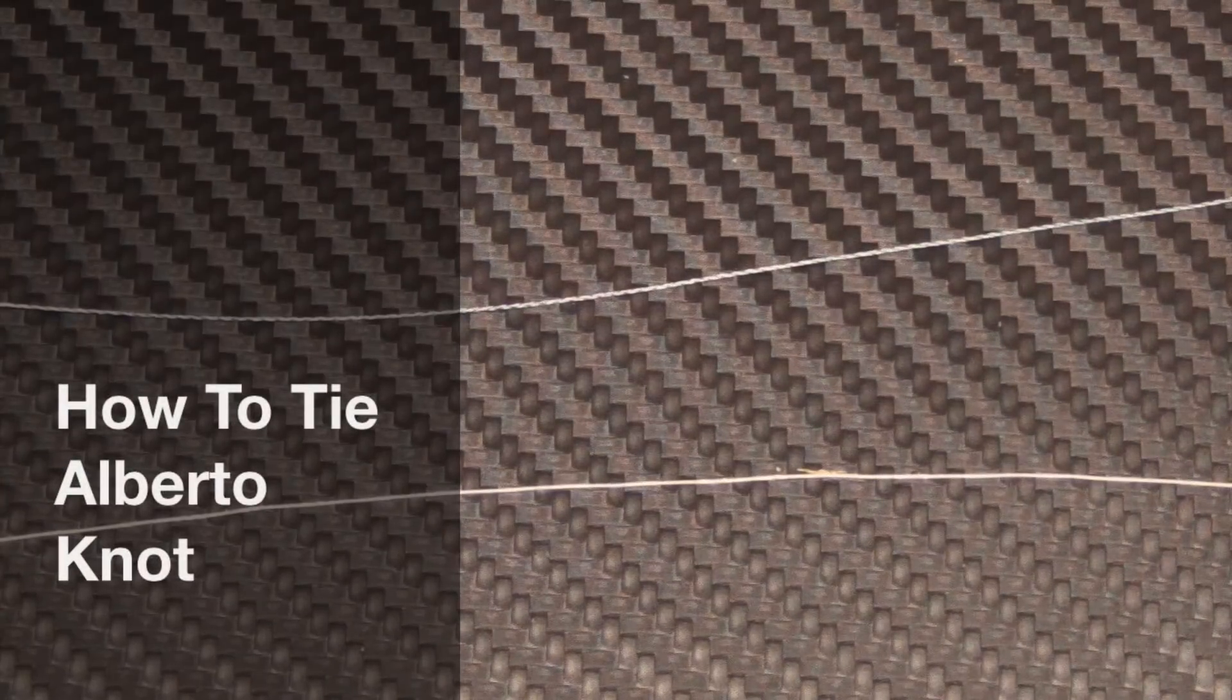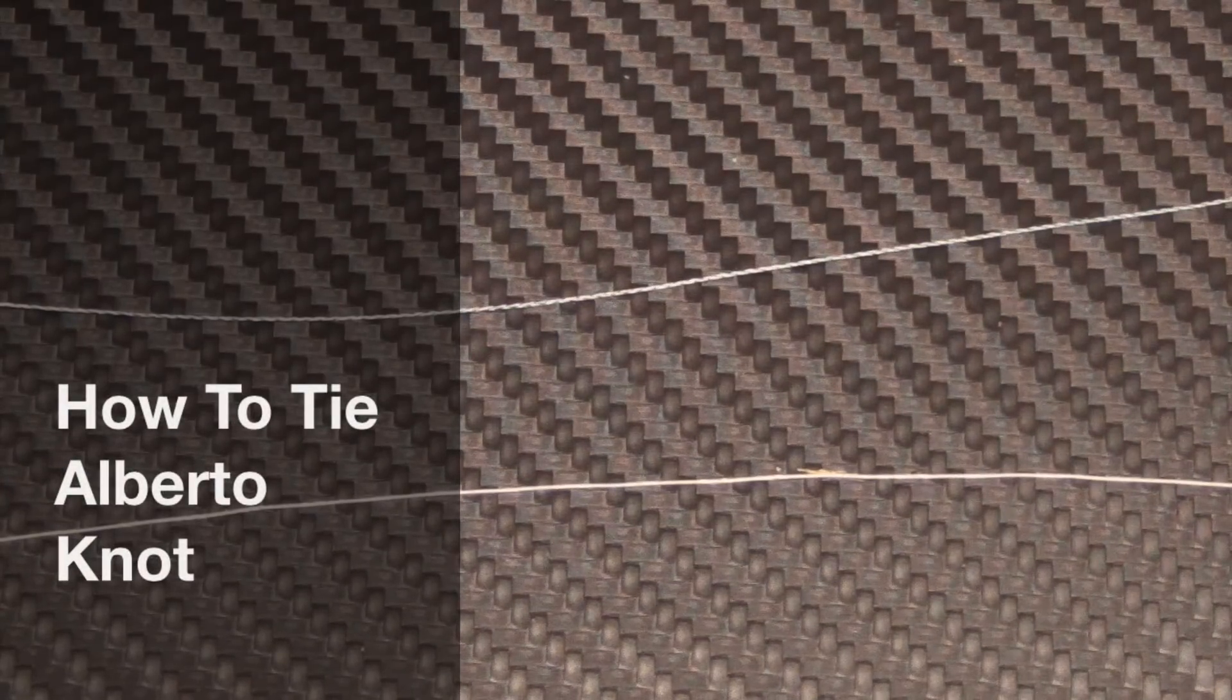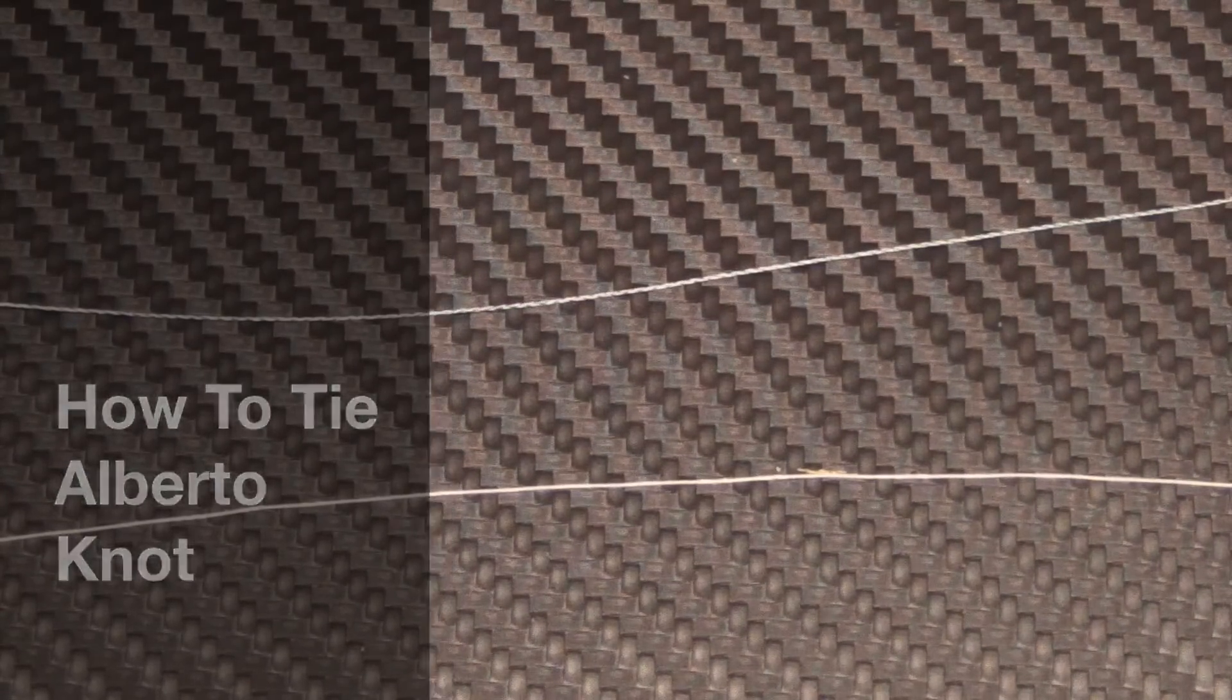I'm going to show you how to tie a knot that is really good for attaching a fluorocarbon leader to a braided mainline. It's a technique that's become pretty popular the last few years, especially in freshwater.